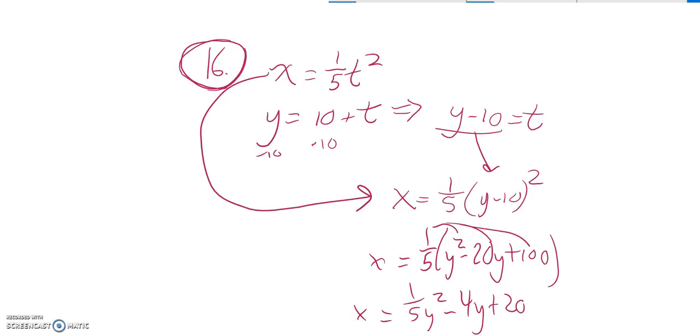And last step, I'll get it equal to zero. Just subtract X from both sides. And I get 1 fifth Y squared minus 4Y minus X plus 20. There it is.